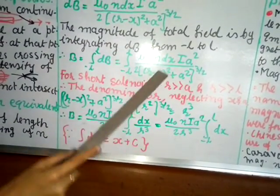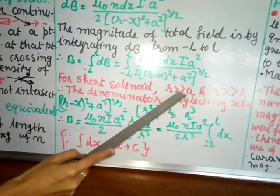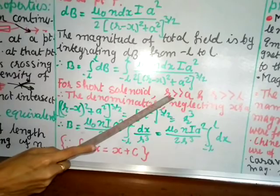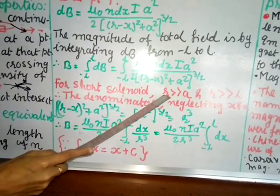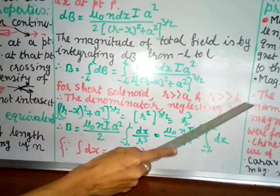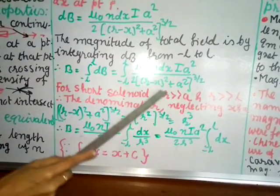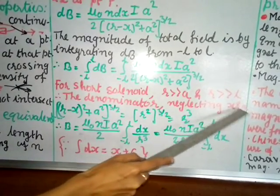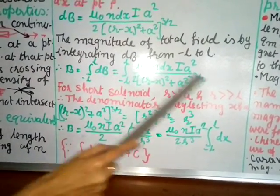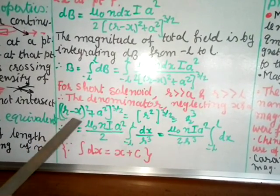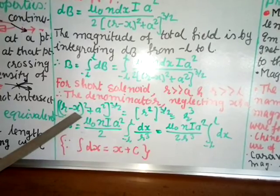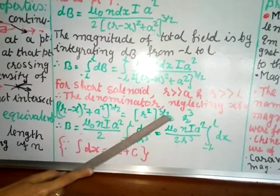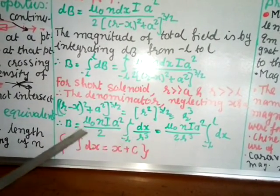For a short solenoid, r is very much greater than a, and r is very much greater than l. We consider point P to be very far compared to both the radius and the length of the solenoid. Therefore, we neglect x and a in the denominator. The term (r−x)² + a² simplifies to r², and (r²)^(3/2) becomes r³.